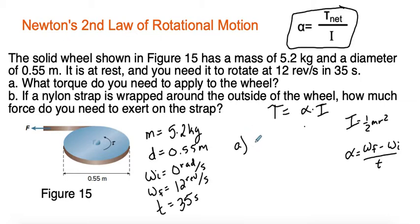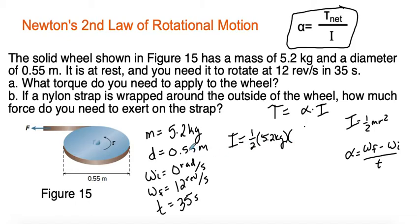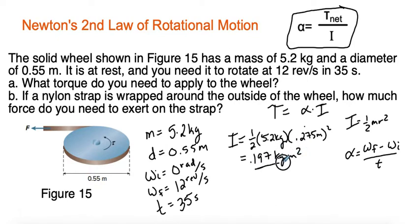We'll need to do a little unit conversion. Let's find the moment of inertia first: one-half times 5.2 kilograms times radius squared. The diameter is 0.55 meters, so the radius is 0.275 meters. So: 0.275 squared times 5.2 times 0.5 gives us 0.197 kilograms times meters squared.